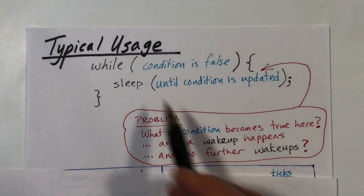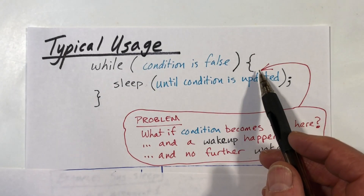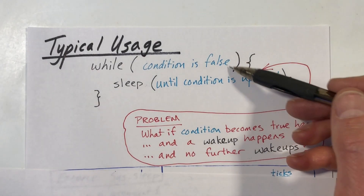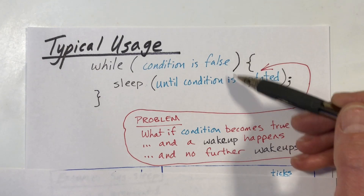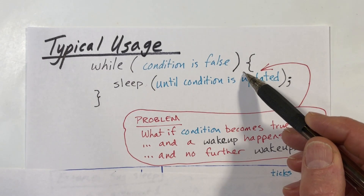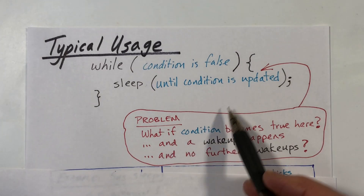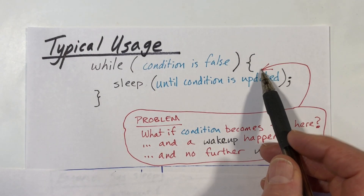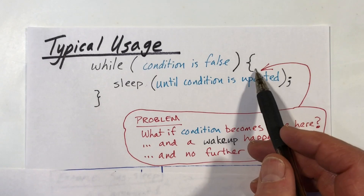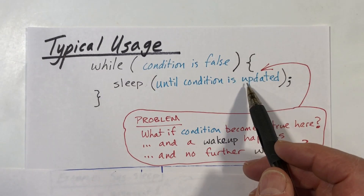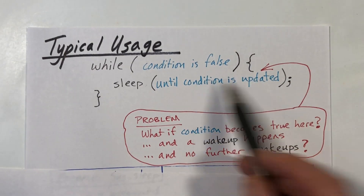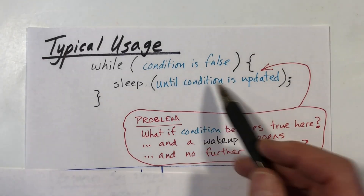There's a problem with this pattern: the condition might become true sometime between being checked and sleep being executed. Other processes run on this core and other cores, and our time slice could end right after the check. They may make the condition true and issue a wakeup — and we would miss it because we haven't yet executed our sleep. If there are no further wakeups, we go to sleep and never wake up.